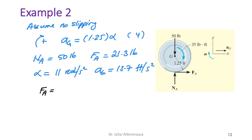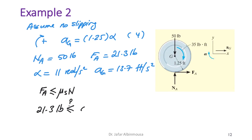We check whether f_A ≤ μ_s·N_A. We compute 0.3 × 50 = 15 lb and compare with f_A = 21.3 lb.